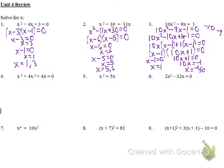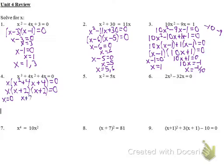Number four, I'm going to start by taking out a common factor. They all have x in common, so that leaves me with x times x squared plus 4x plus 4 equals 0. I can factor the trinomial — product of 4 that adds to 4 — giving x plus 2, x plus 2. Setting each factor equal to zero, I get x equals 0 and x equals negative 2. So my two solutions are 0 and negative 2.